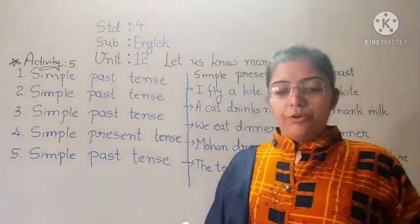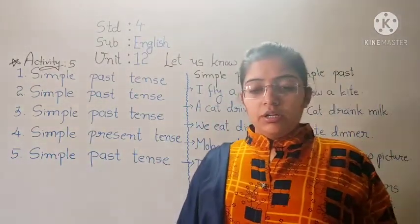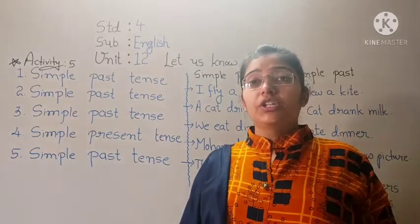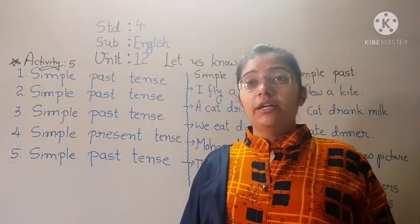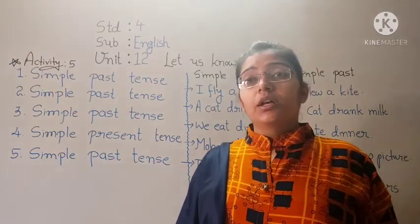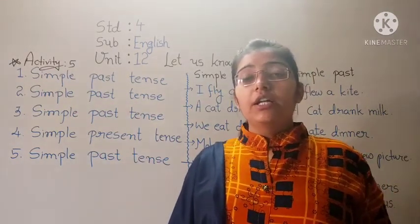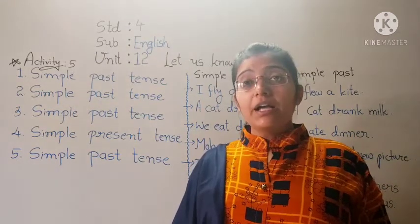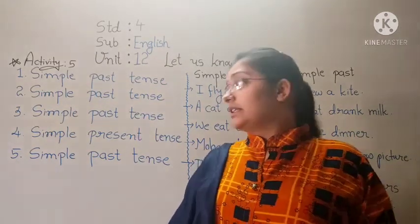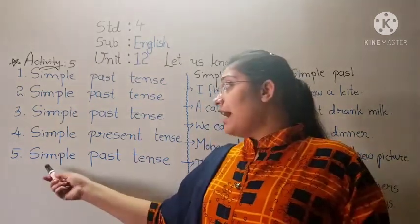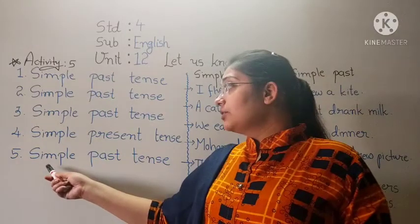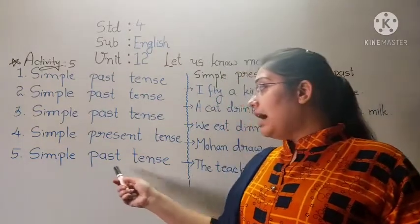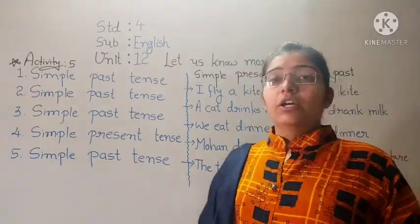Number 5: 'She scolded him.' Scolded — scold ka past form hoga. So the answer for number 5 is Simple Past Tense.